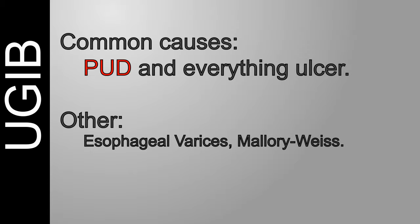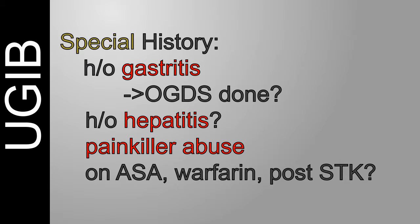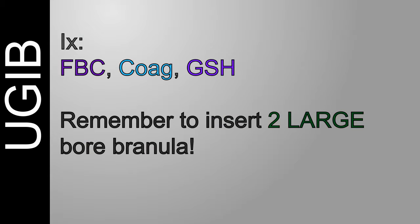We only ask a UGIB patient: does the patient have a history of gastritis, any OGD done and what were the findings? Does the patient have hepatitis — think about oesophageal varices? Does the patient abuse painkillers — this happens so much with patients with joint pains? And of course, is the patient on aspirin or warfarin? Then examine the abdomen and do a PR.